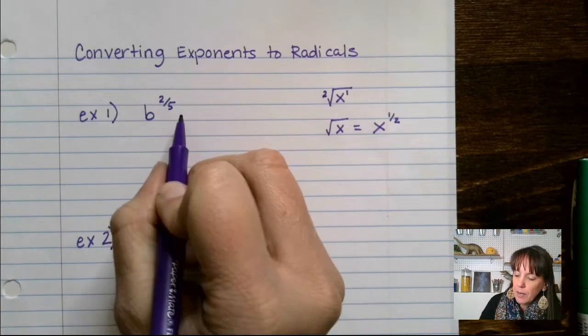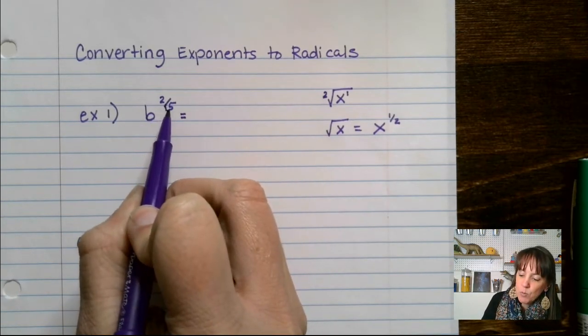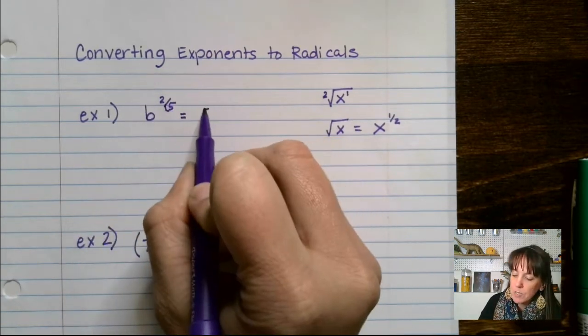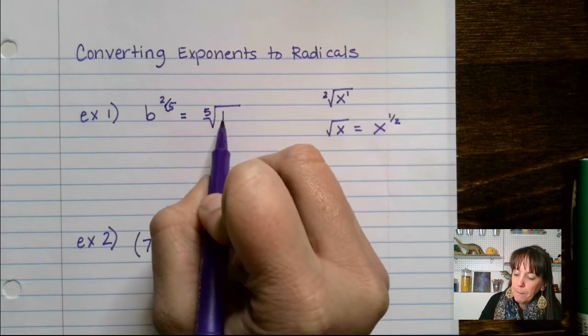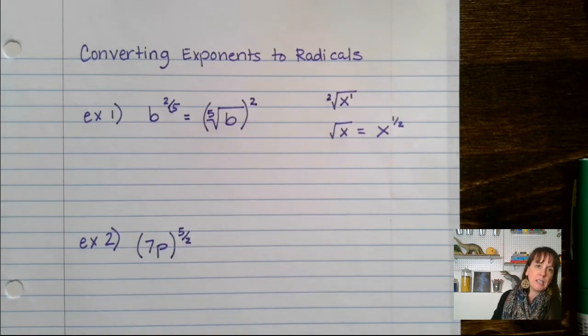So let's talk about how we can convert these. We see that this 5, I like to think of this guy as like a little boot, and it's going to kick it to the front. So we say this root of b, and all of that is going to be squared. You can look like that, or you can attach it to the b.